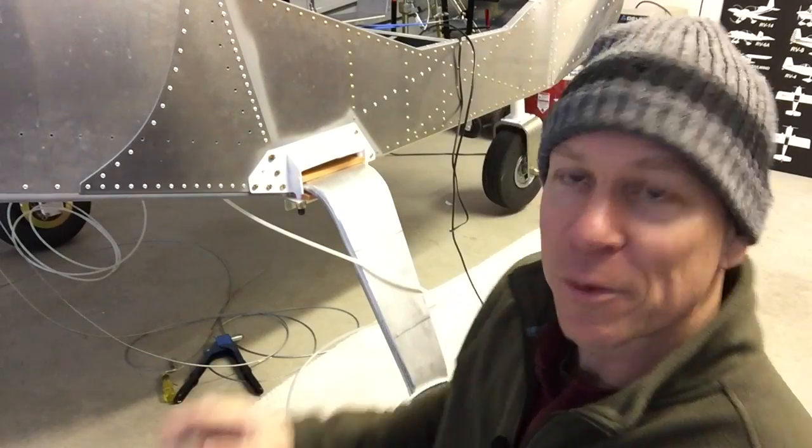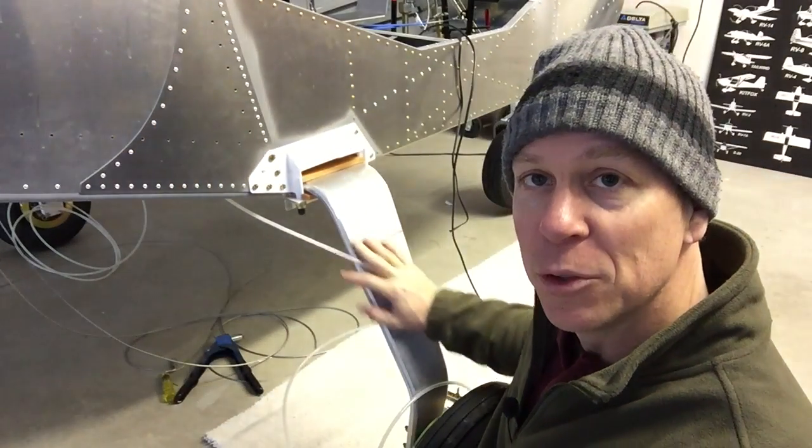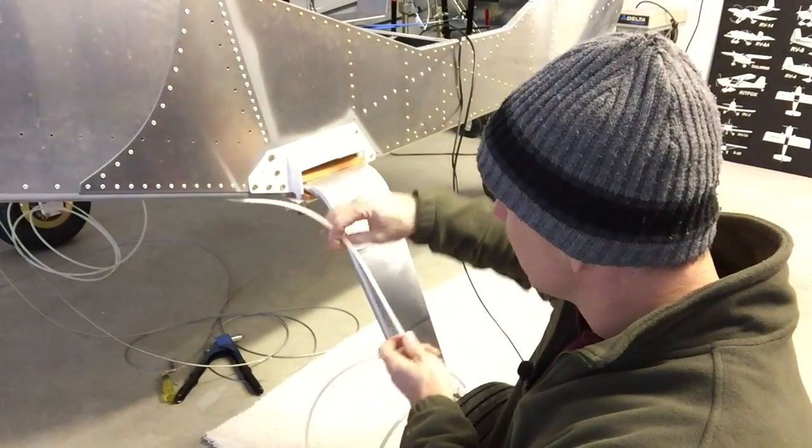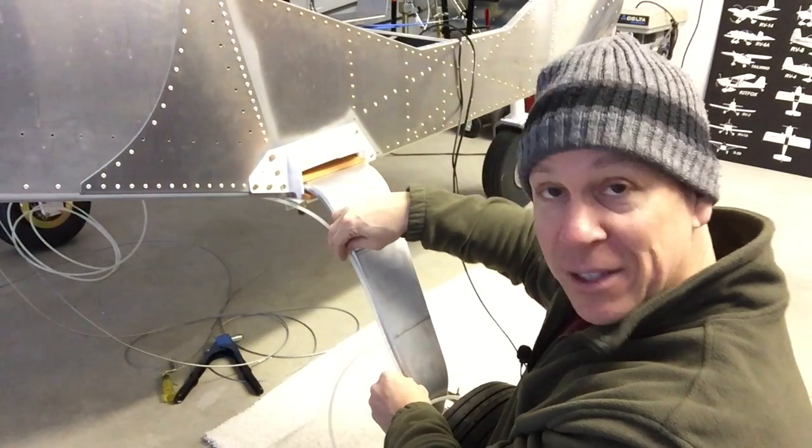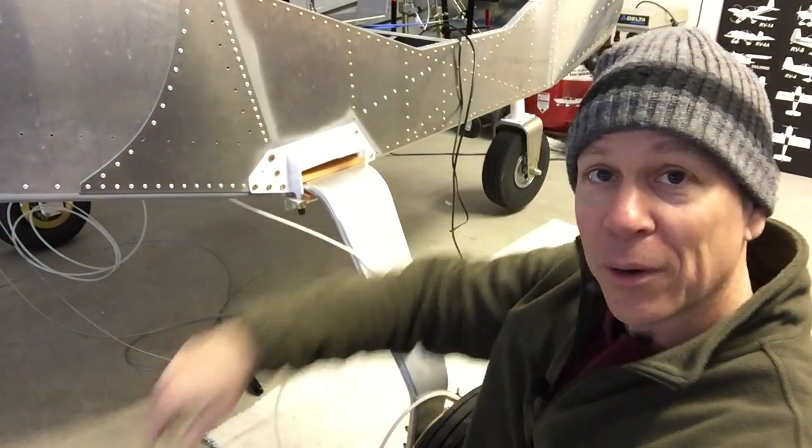Today's video is going to be on how I routed my brake lines out of the bottom of the fuselage. Everybody knows that most people will put an aluminum tube on the back of the gear to hold the brake lines, and that's exactly what I plan to do. But what I really didn't like is how the brake line comes out of the bottom of the fuselage.